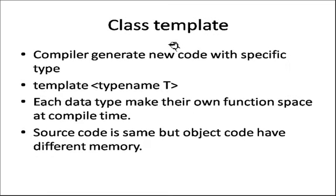Next slide: class template. The compiler generates new code with a specific type. According to the data type, it becomes a specific function that is assigned unique memory for that particular function. Using 'template <typename T>' or 'template <class T>', each data type makes its own function space at compile time. The source code is a single copy of the class with templates, but after compilation there are different memory allocations for each function.